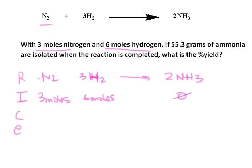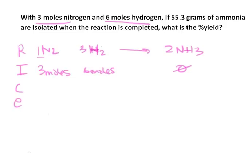you need one nitrogen for every three hydrogens to make two ammonias. So, based on this, it looks like we would need nine moles of hydrogen to consume all of this nitrogen. And so, hydrogen would be our limiting reactant. So, this is going to be completely consumed.